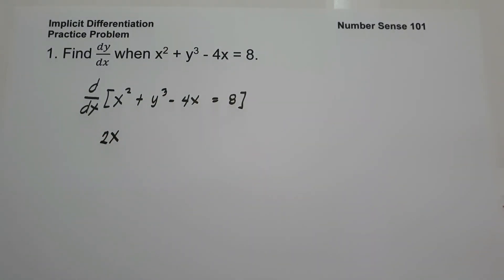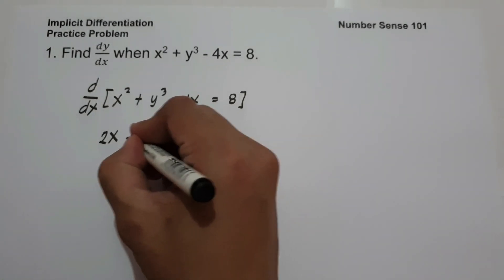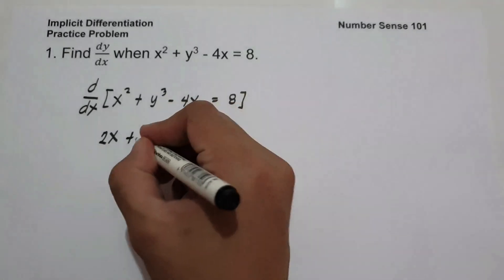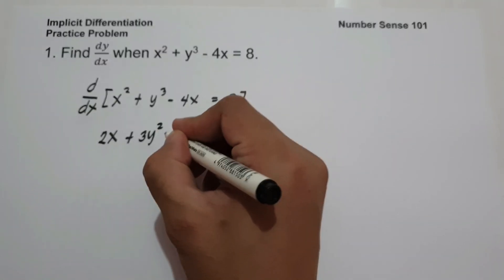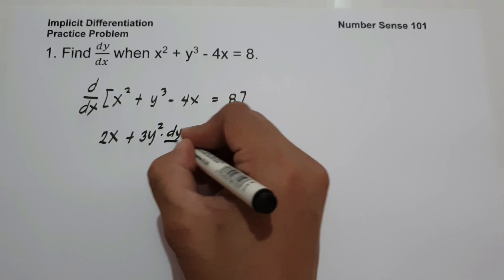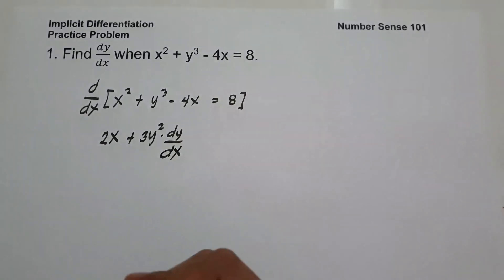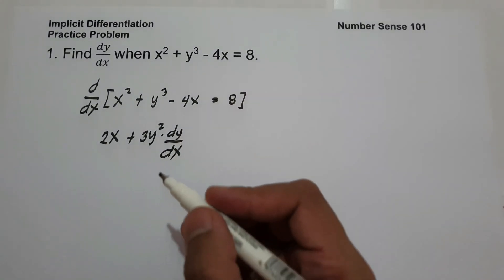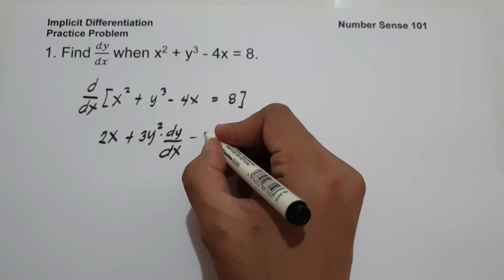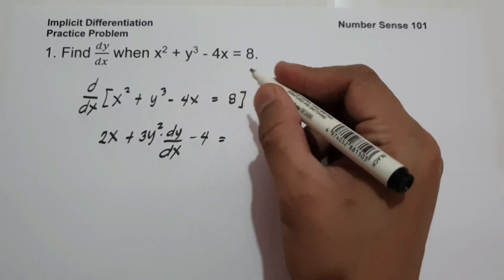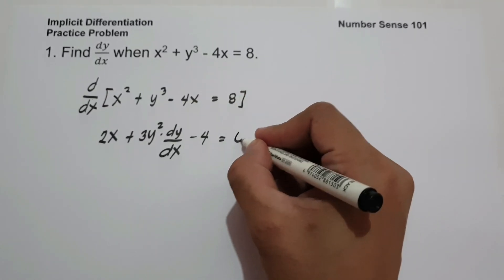Whenever you differentiate a y variable, it is always associated with dy over dx. So the derivative of y cubed is 3y squared, multiplied by dy over dx. And the derivative of negative 4x is negative 4. And the derivative of 8 is 0.